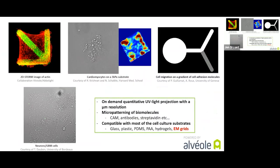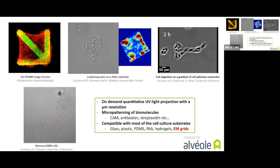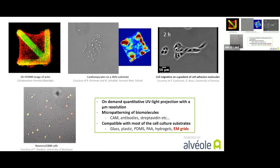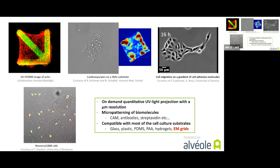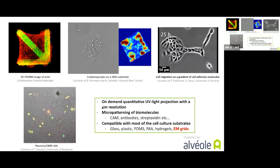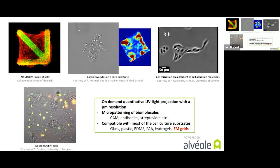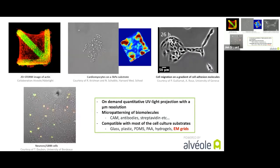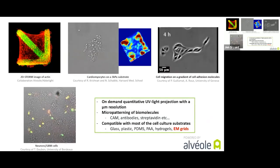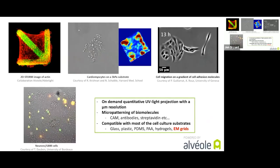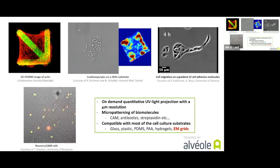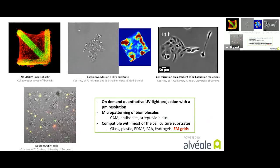If the biomolecules printed by PRIMO promote cell adhesion, cells will adopt the size and shape of the micropattern. PRIMO is suitable to print any biomolecules — such as cell adhesion molecules, antibodies, streptavidin, etc. — onto most substrates commonly used in cell biology: glass slides, plastic petri dishes, soft materials, hydrogels, but also on electron microscopy grids, as will be detailed later.